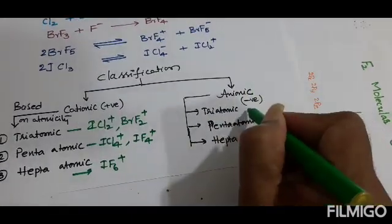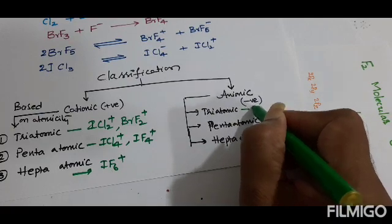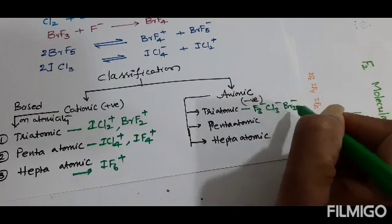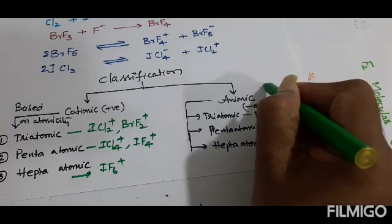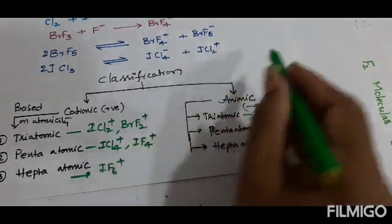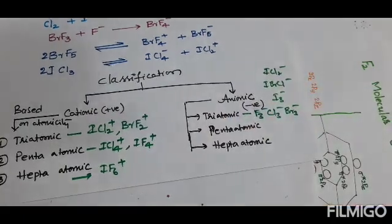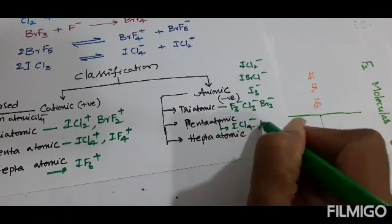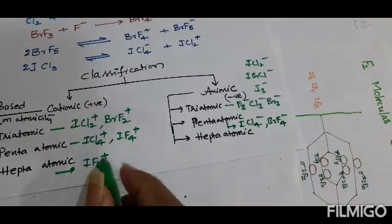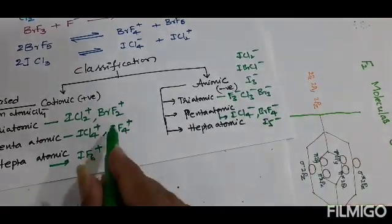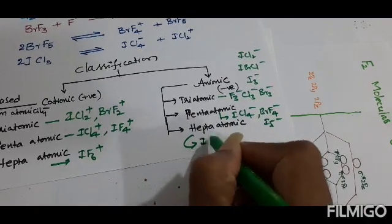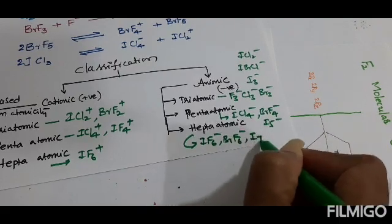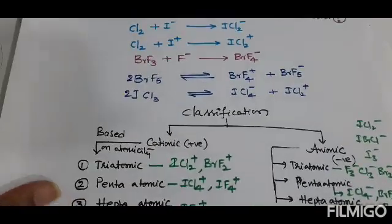For anionic polyhalides: triatomic examples include F3⁻, Cl3⁻, Br3⁻, I3⁻, IBrCl⁻, and ICl2⁻ — a large number. Pentatomic examples include ICl4⁻ and BrF4⁻. Heptatomic examples include I5⁻, IF6⁻, BrF6⁻, and I7⁻. So these are the different examples for heptatomic polyhalides.